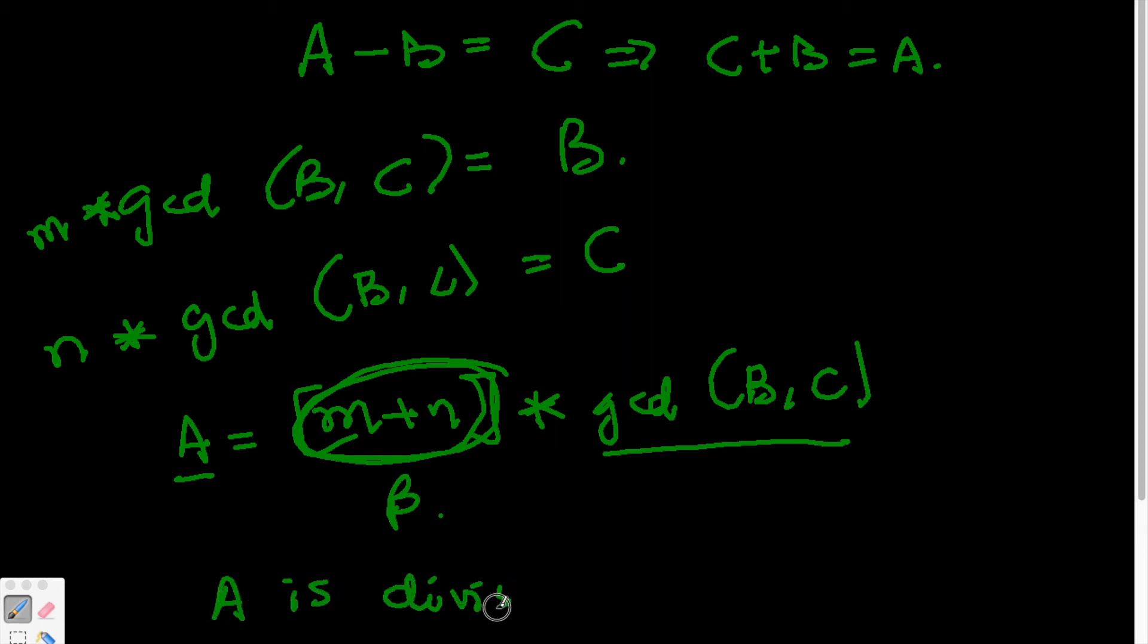And that tells us that actually A is divisible by the gcd(B,C). So, just writing that down, A is divisible by gcd(B,C). From earlier, of course, we have C is divisible by gcd(A,B).